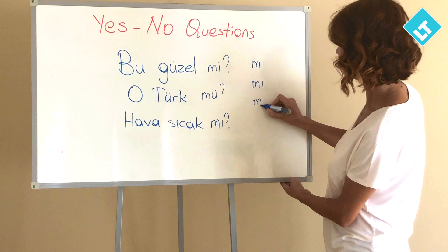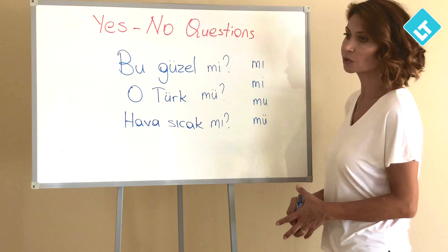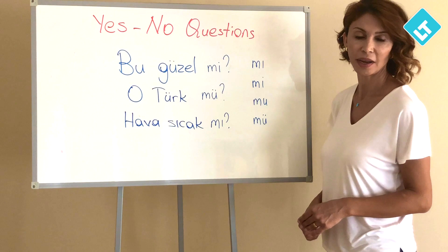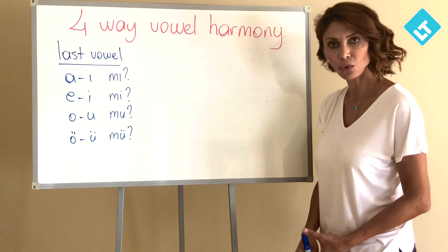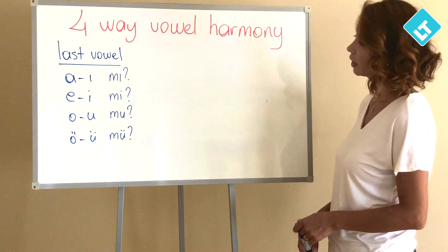In Turkish, if a suffix or particle has four different forms, it follows four-way vowel harmony. In the last lesson you learned two-way vowel harmony — you can watch that video to remember the first part. Now we are learning four-way vowel harmony because our particle has four different forms, but the second rule may need some memorizing.